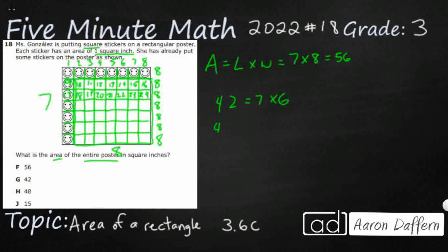And then 48 — that's going to be eight times six. So we're getting eight columns, but we're missing that first row. And then 15 is literally counting how many smiley face stickers are actually sitting on the poster right now — just counting the visible smiley face stickers. All of those are incorrect. Our answer is F, 56 square inches.